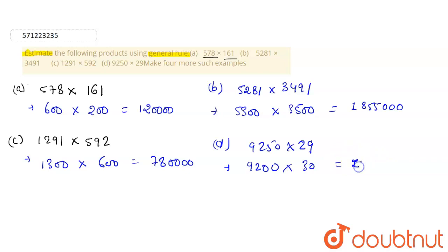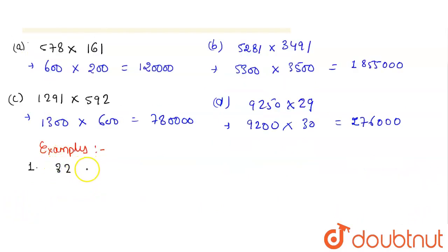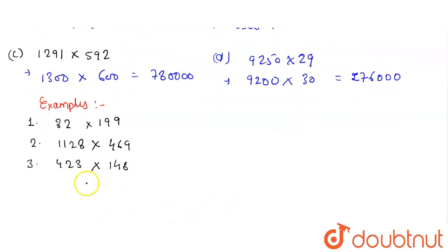In our last part, we have to give some examples. The examples could be anything. Let's consider the examples. Our first example would be 82 and 199. Let's take the second example as 1128 and 469. In the third example, let's have 423 multiplied with 148. In our last example, let's take 5840 and 461.